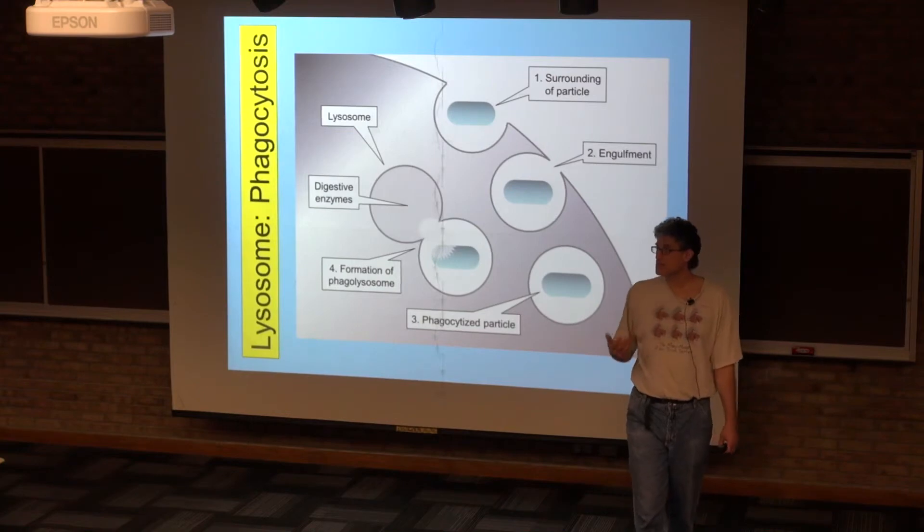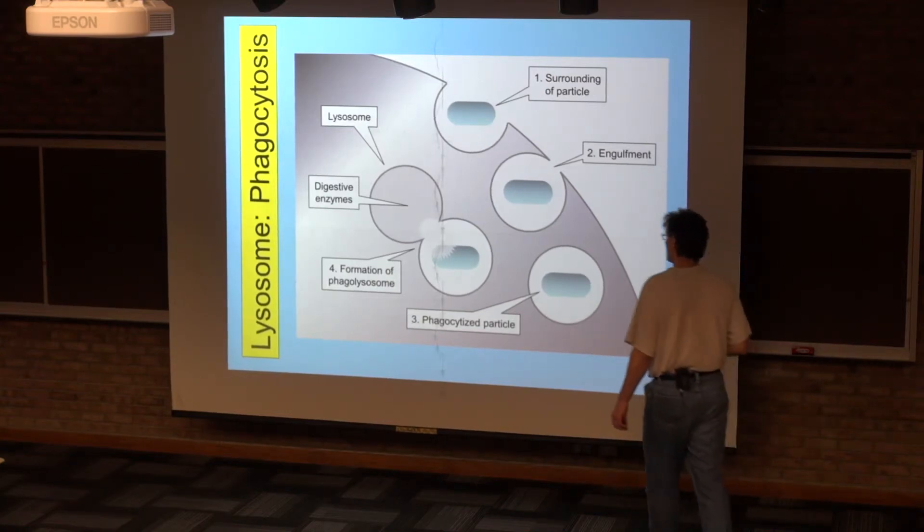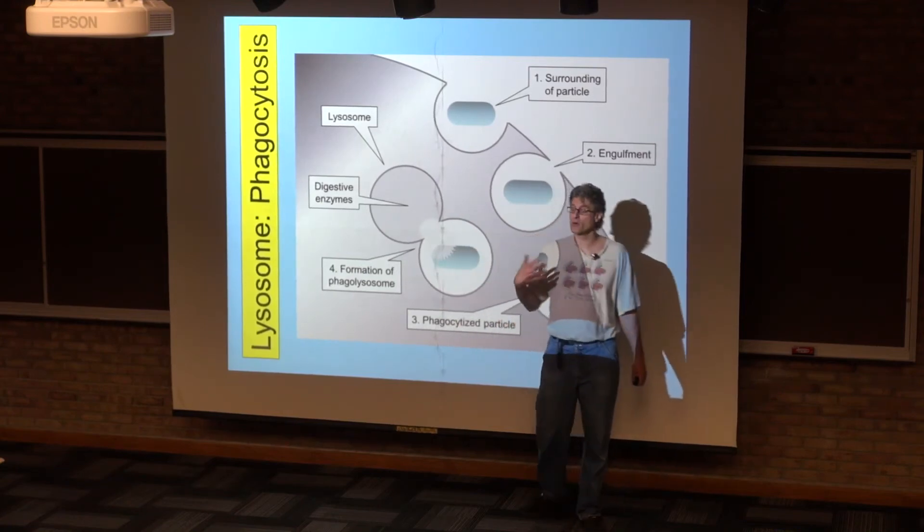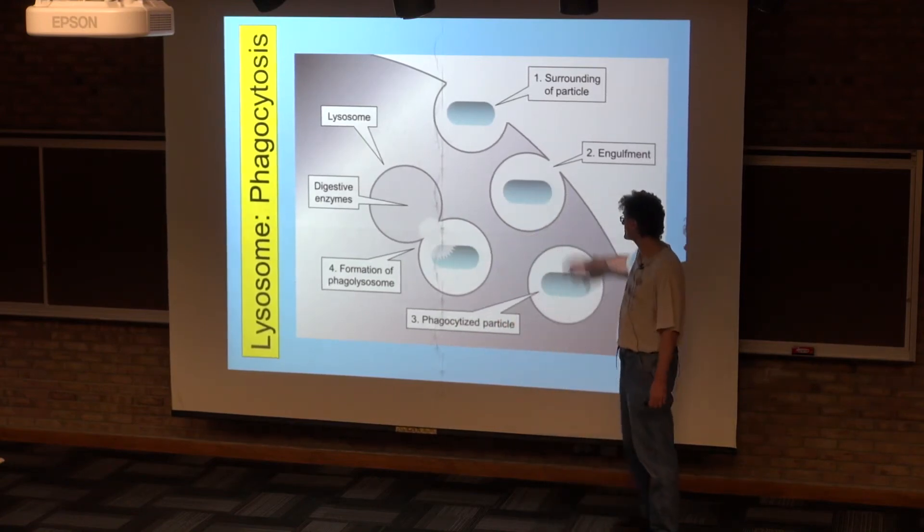They can actually escape or hide from the immune system of the cell by thwarting these digestion processes or by thwarting phagocytosis.